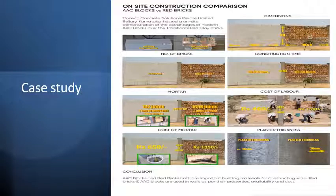On-site construction comparison — AAC block versus red clay brick: Concern Concrete Solution Private Limited, Bailey, Karnataka hosted an on-site demonstration. One AAC block equals 6 normal clay bricks. For dimensions of 10.8m x 8m, 60 AAC blocks were required versus 585 clay bricks. Construction time: 3 hours for AAC block versus 6.5 hours for clay bricks. Mortar joints: 162 for AAC block versus 1,656 for clay bricks.